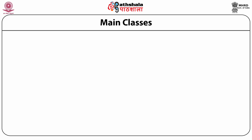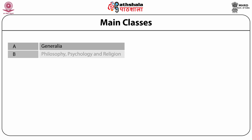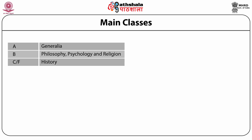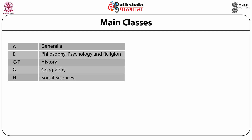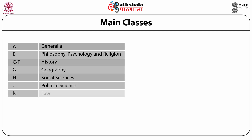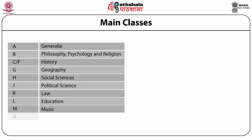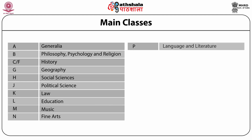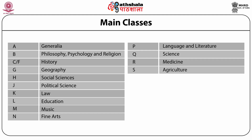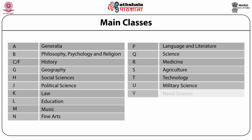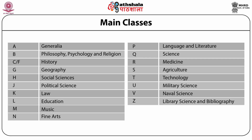Its main classes are denoted by alphabets A to Z as follows: A — General works or miscellaneous classes; B — Philosophy, Psychology and Religion; C, D, E, F — all assigned to the class History; G — Geography; H — Social Sciences; J — Political Science; K — Law; L — Education; M — Music; N — Fine Arts; P — Language and Literature; Q — Science; R — Medicine; S — Agriculture; T — Technology; U — Military Science; V — Naval Science; Z — Library Science and Bibliography. You will notice that some of the classes are lying vacant for future use.